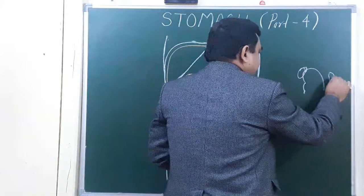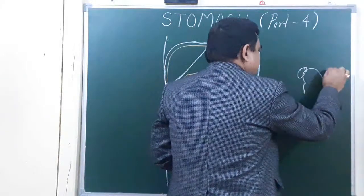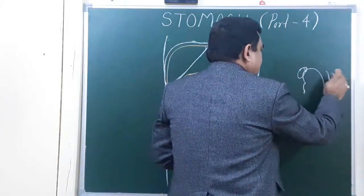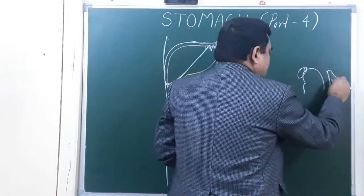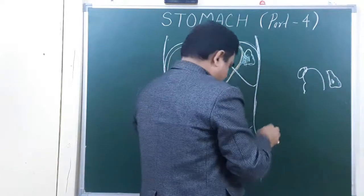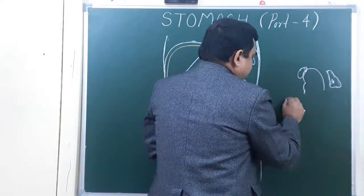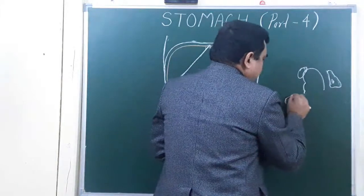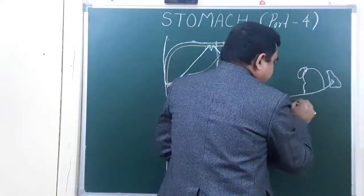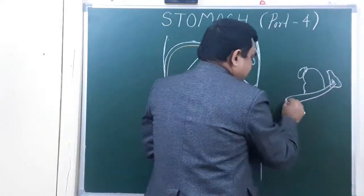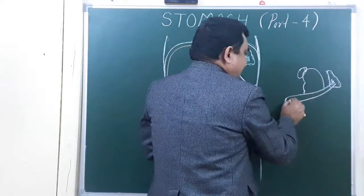This is the position of the spleen. This is the spleen. And here is the position of the pancreas. This is the pancreas. Here is the head of pancreas. This is the superior surface. This is the pancreas.